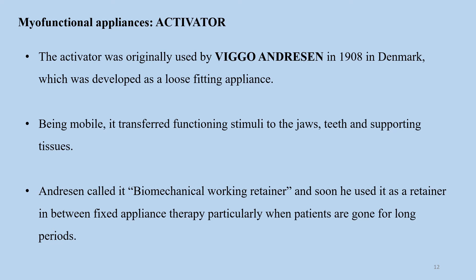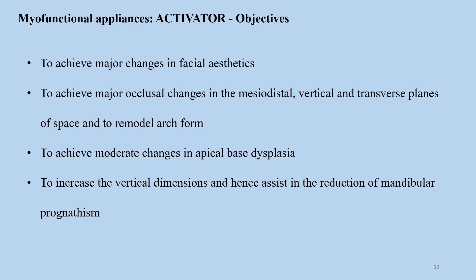The activator was originally used by Viggo Andresen in 1908 in Denmark; however, it was developed by Kingsley in 1879. It was used as a loose-fitting appliance — as it is mobile, it transferred functional stimuli to the jaws, teeth, and supporting tissues. Andresen called it the 'biomechanical working retainer,' and it was soon used as a retainer in fixed appliance therapy between patient visits. We will now look at the objectives, indications, contraindications, and mode of action of the activator.